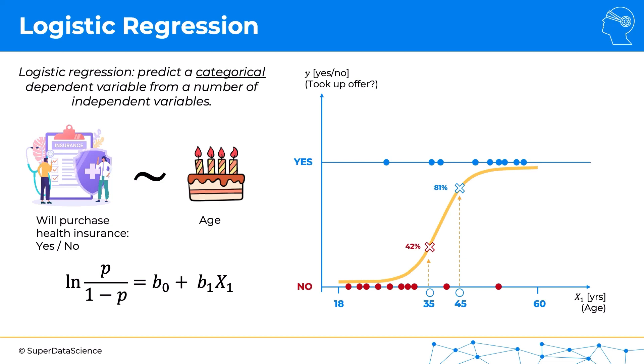The logistic regression gives us probabilities of somebody saying yes, so somebody taking up that offer. For the 35-year-old, it's a 42% chance that they will take up the offer based on this model. This is what the model is predicting—it's predicting a 42% chance they will take up the offer. And for the 45-year-old, there's an 81% chance they will take up the offer.